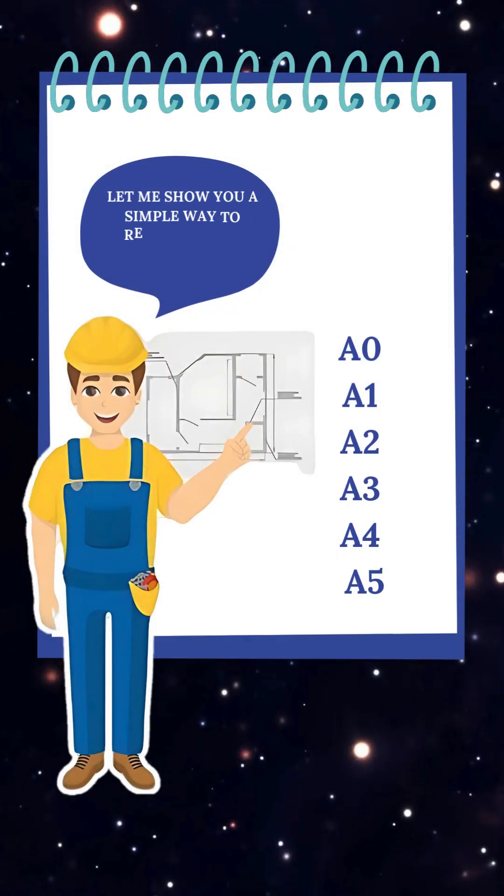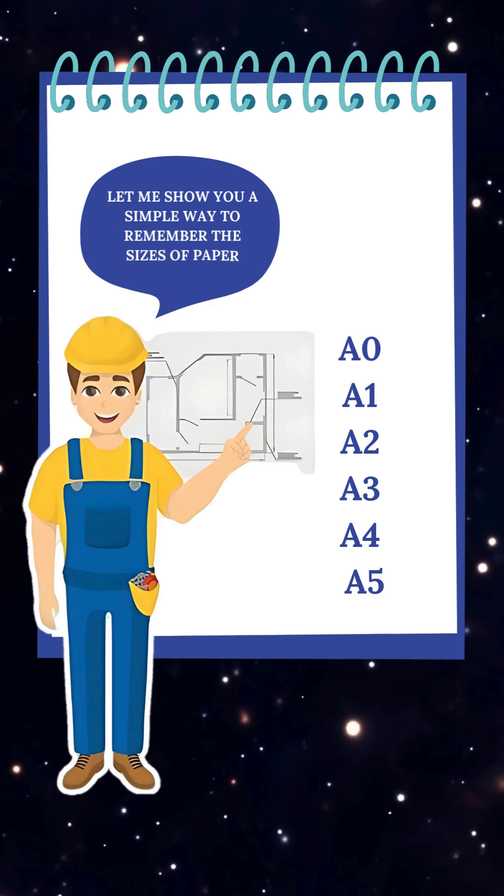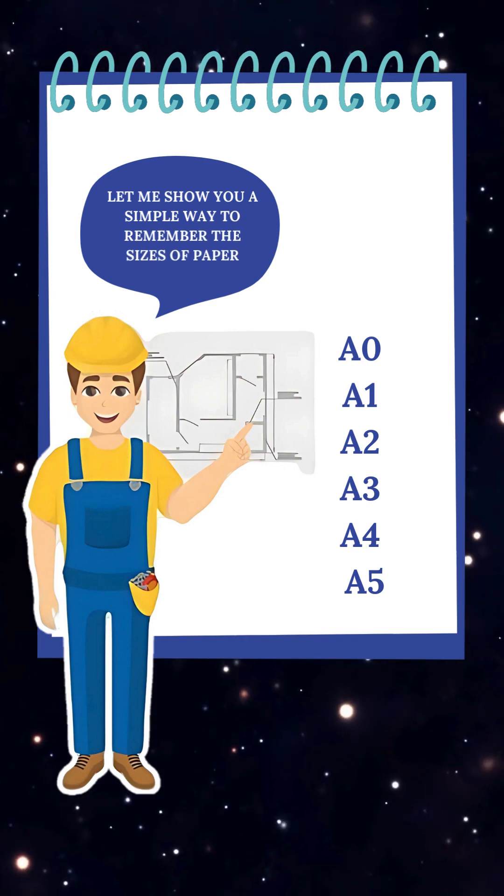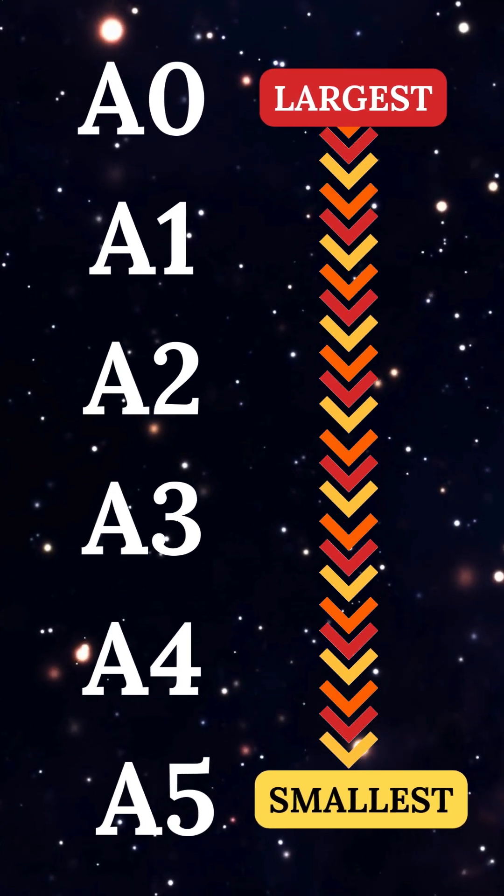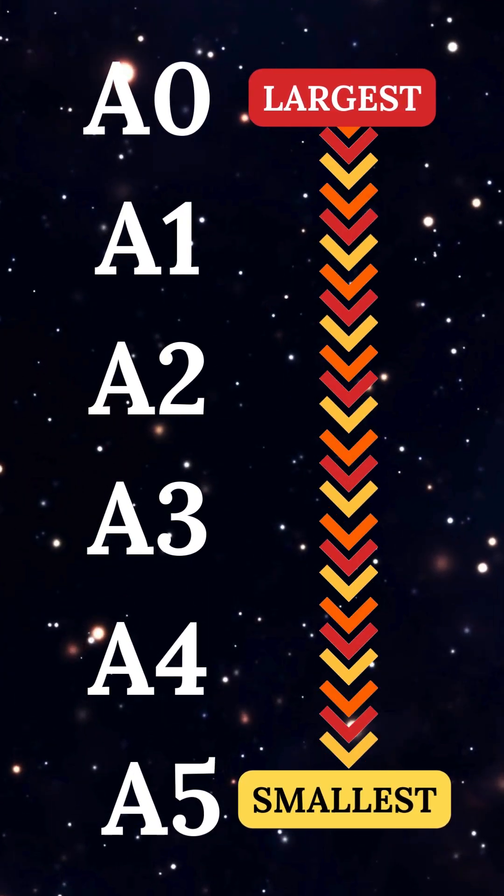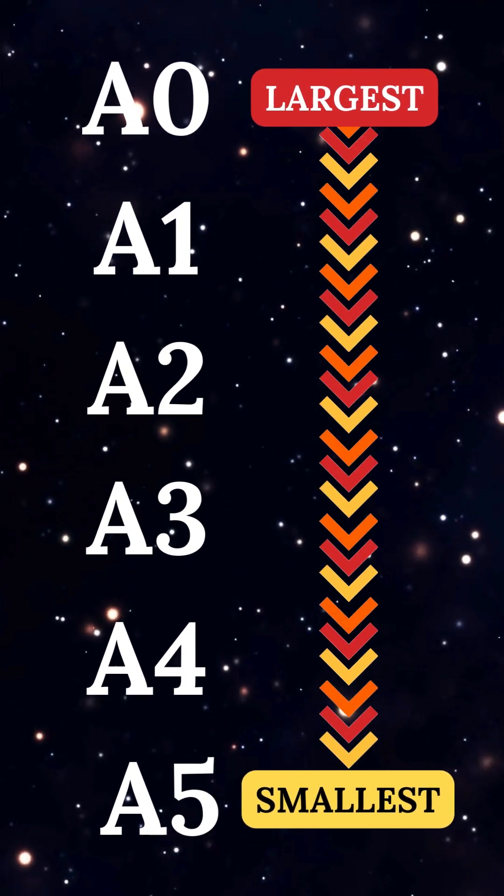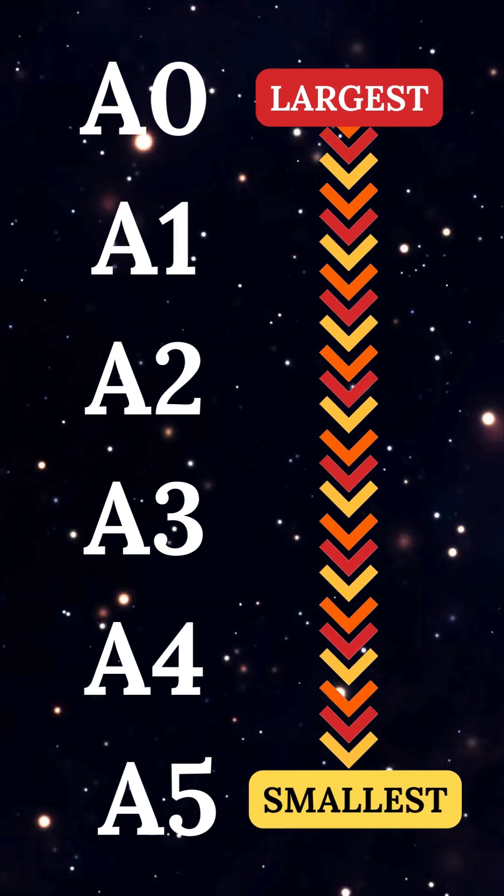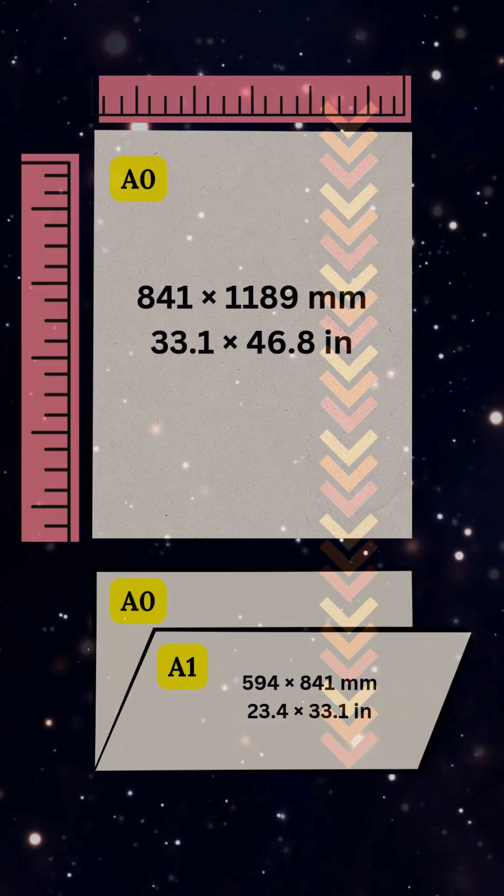Let me show you a simple way to remember the sizes of paper called the A series, which is used for engineering drawings. Here's a trick. The sizes go from A0, which is the largest, down to A5, which is smaller. And here's the cool part. Each time you fold the paper in half, you get the next size.